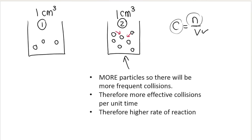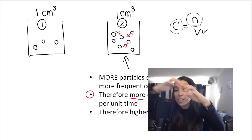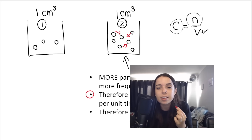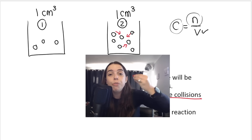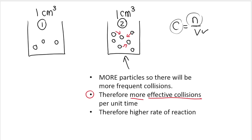If there are more particles in the same volume, there will be more collisions — these particles are going to bump into each other a lot more frequently. The more frequently they collide, the better the chance that there will be more effective collisions per unit time, and therefore the rate of the reaction will be higher.